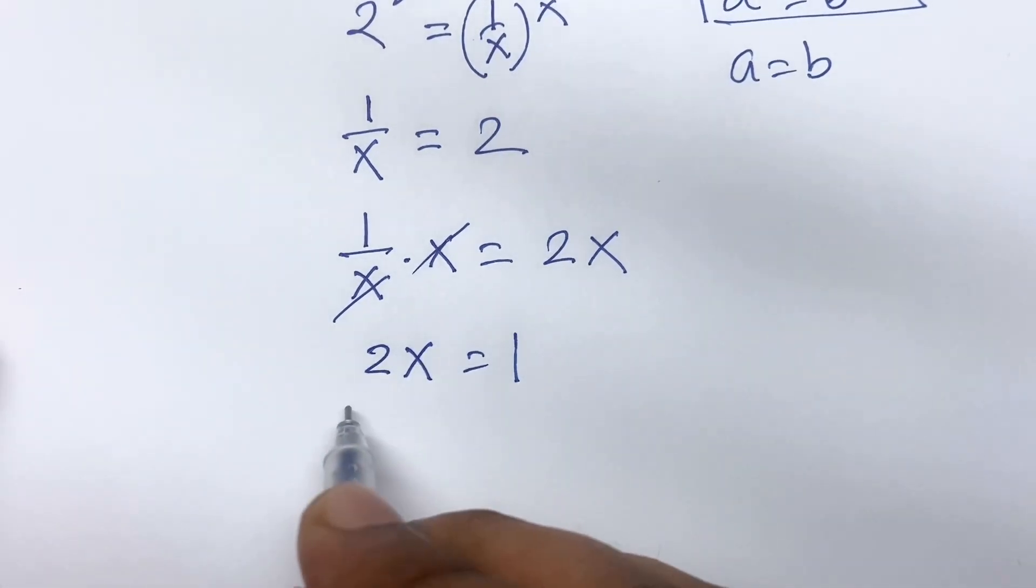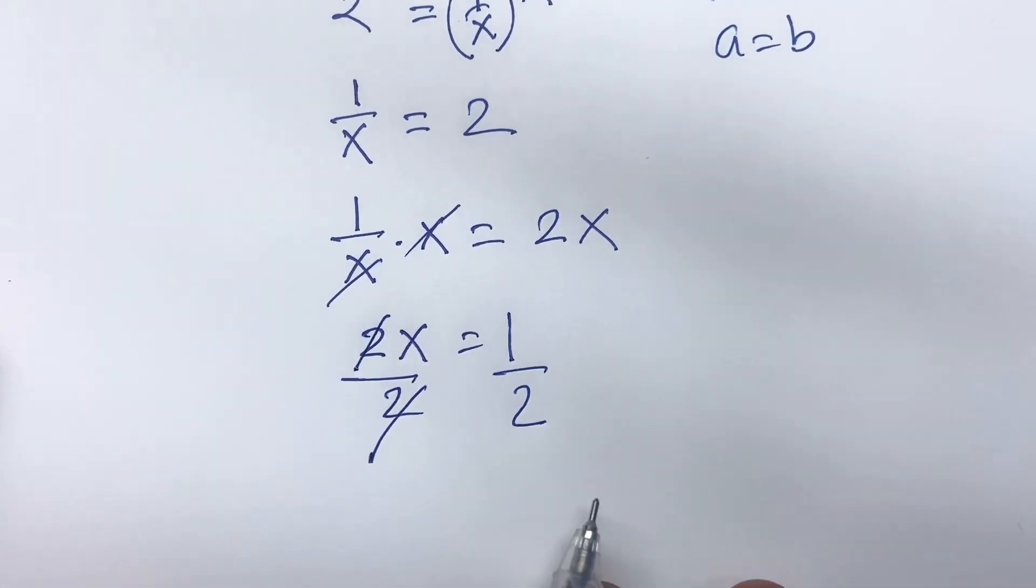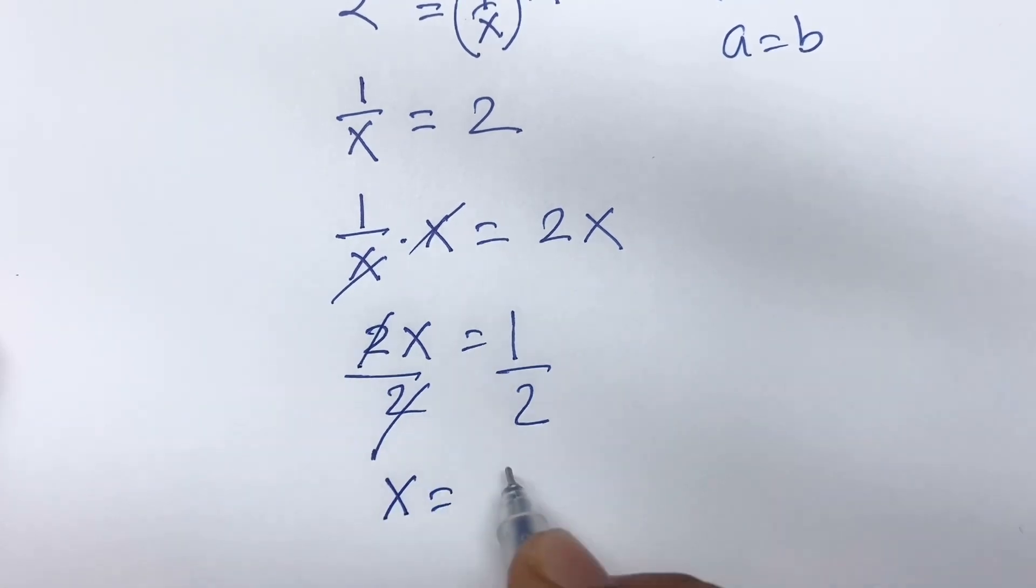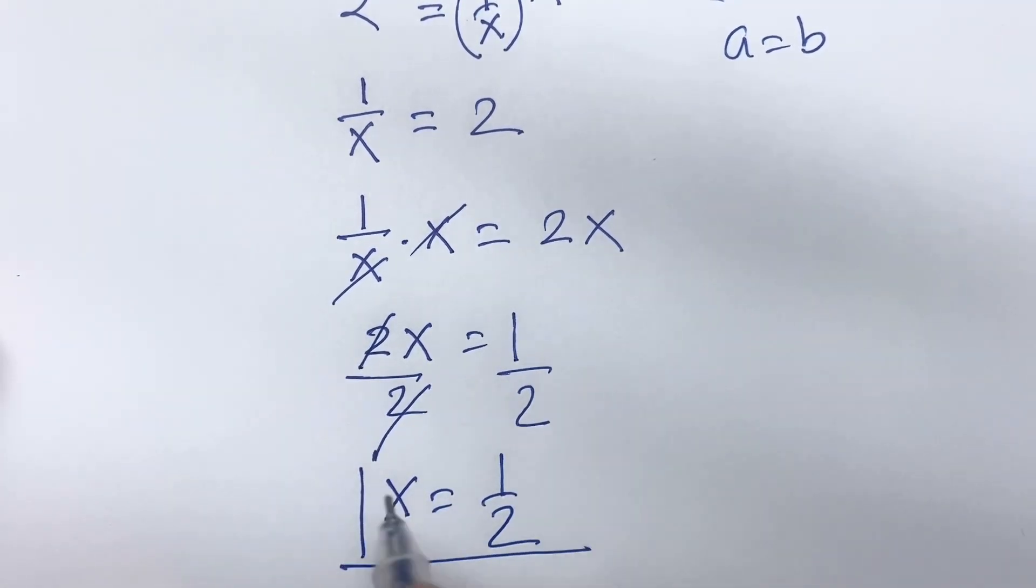Now, I divide both sides by 2. So, 2 cancels. So, the value of x is half. This is our final answer.